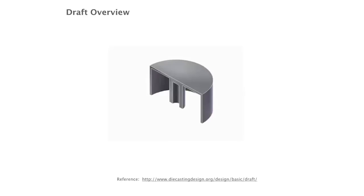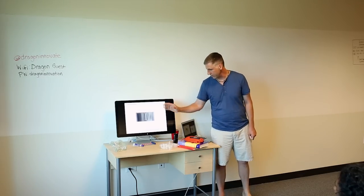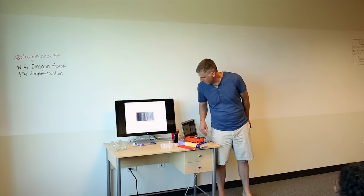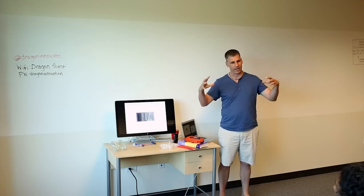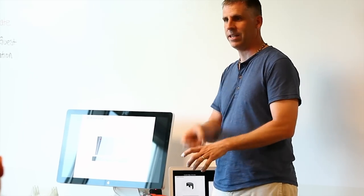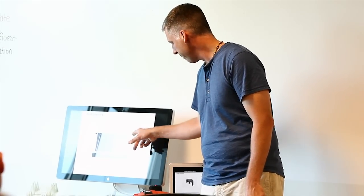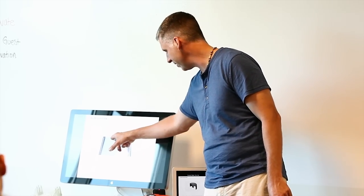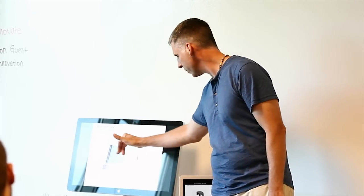Here's a quick video showing what draft looks like. Starting with an undrafted part in cross-section, we'll sequentially add draft to different features. You need draft because everything shrinks — the part will bind on the core very tight and you'll never be able to eject it, and if you did it would scratch terribly. We draft the core side, then the cavity side, and then must deal with the ribs, which get very thick at the bottom — creating a cooling problem and potentially sink marks.